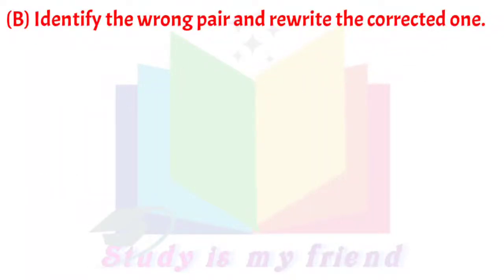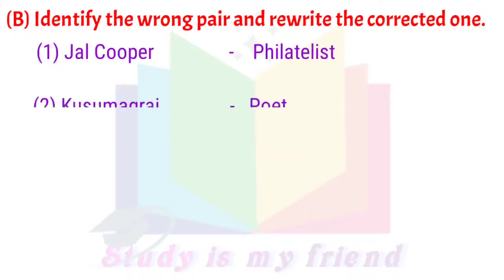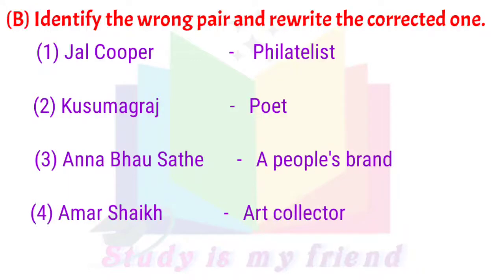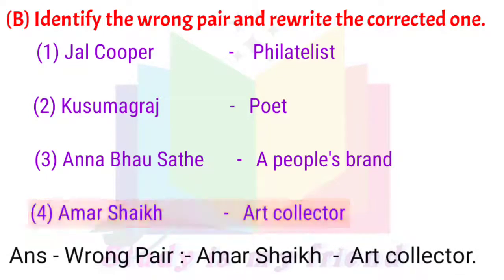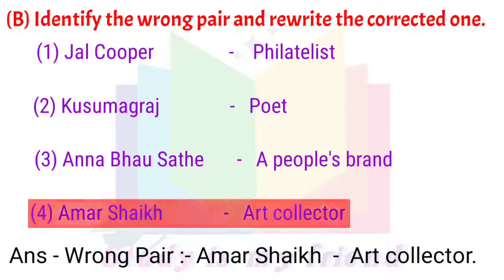Question 1B: Identify the wrong pair and rewrite the correct one. 1. Jarl Cooper — Philatelist, 2. Kusumagraj — Poet, 3. Anna Bhau Sathe — A People's Brand, 4. Amar Sheik — Art Collector. Answer: Wrong pair — Amar Sheik, Art Collector.